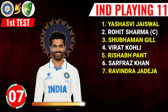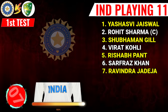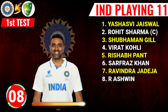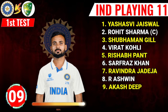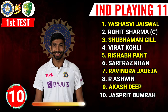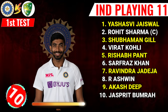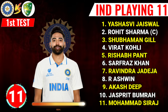Number 7: Ravinder Jadeja, left hand all-rounder. Number 8: Ravichandra Naswin, right hand all-rounder. Number 9: Akas Thip, right arm fast bowler. Number 10: Jaspit Bumrah, right arm fast bowler. Number 11: Mohamed Siraj, right arm fast bowler.